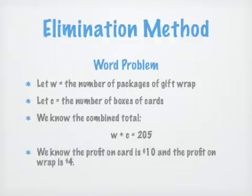We're going to look at the word problem. Again, as I say, it's setup. Let W be the number of packages of gift wrap and C equal the number of boxes of cards. It's clear that all packages total 205, so we have W plus C equals 205.